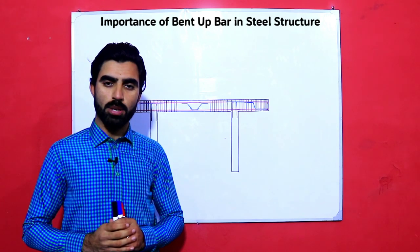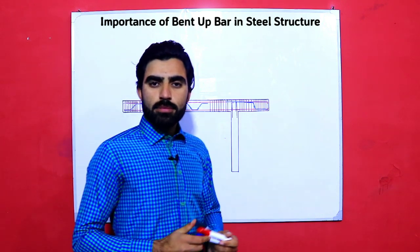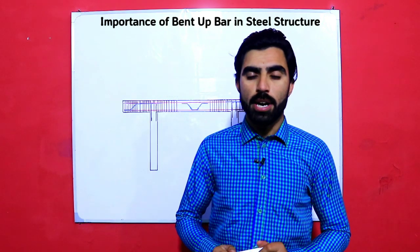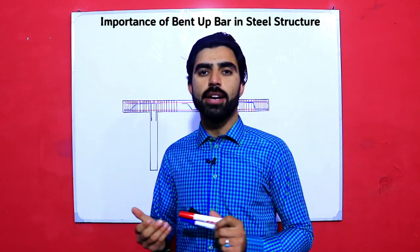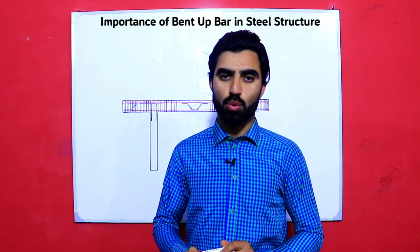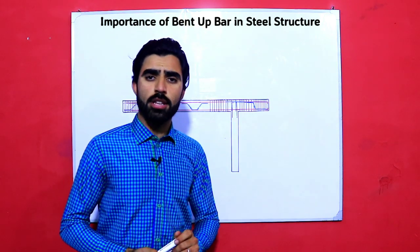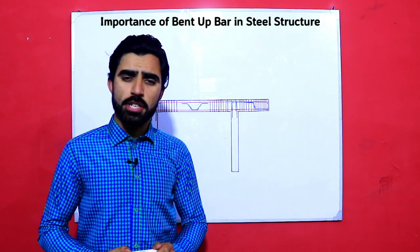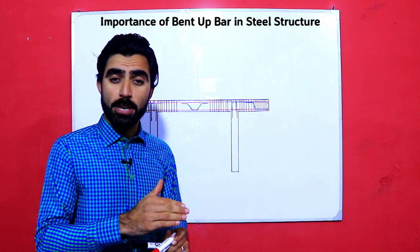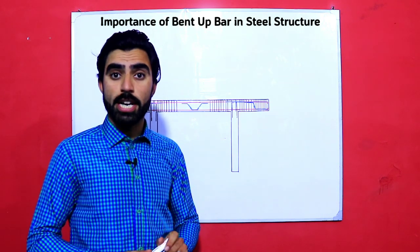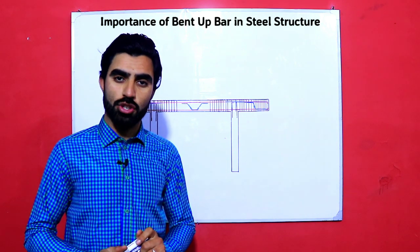Assalamu alaikum guys, welcome back to Civil Engineers YouTube channel. Today we discuss the importance of bent-up bar in steel structure, specially in beams and columns. Many students don't have an idea, and they are asking: can we provide a column on the beam, specially in a cantilever beam at the free end or not? Of course, it's a very strange question.